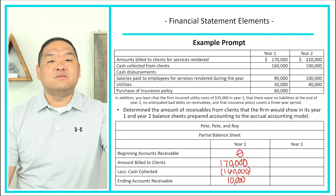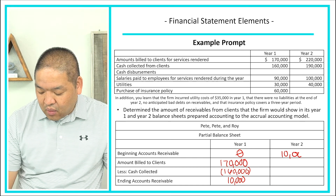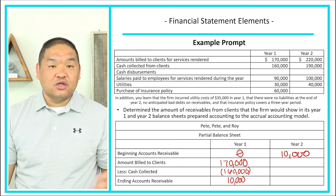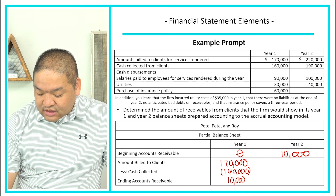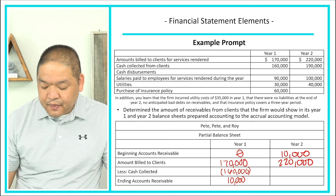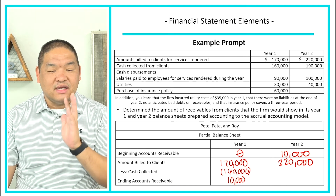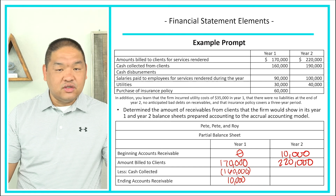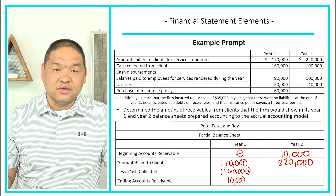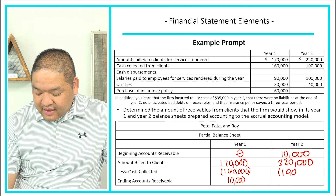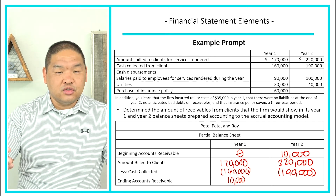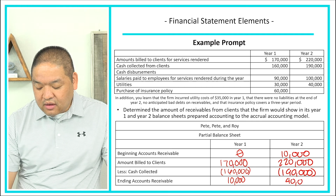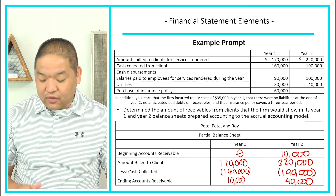The ending balance of $10,000 from year one becomes the beginning balance for year two. In year two, we earned $220,000 in revenues, increasing accounts receivable by $220,000. We collected $190,000 in cash from clients, reducing the balance. So: $10,000 beginning plus $220,000 minus $190,000 equals an ending accounts receivable balance of $40,000 for year two.